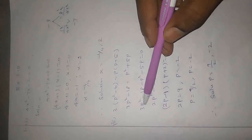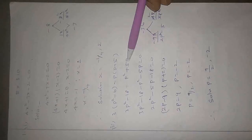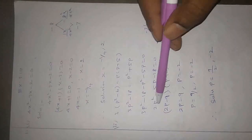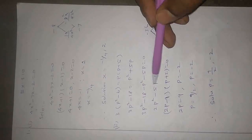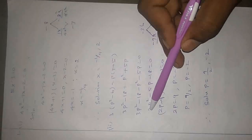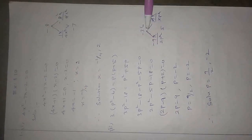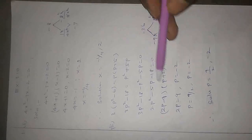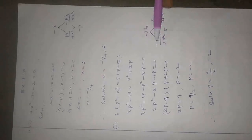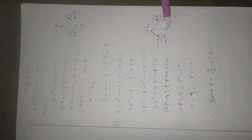Taking all terms to one side: 3p squared minus 18 minus p squared minus 5p equals 0. So 3p squared minus p squared gives 2p squared minus 5p minus 18 equals 0. Using the factorization method: 2 into minus 18 equals minus 36.